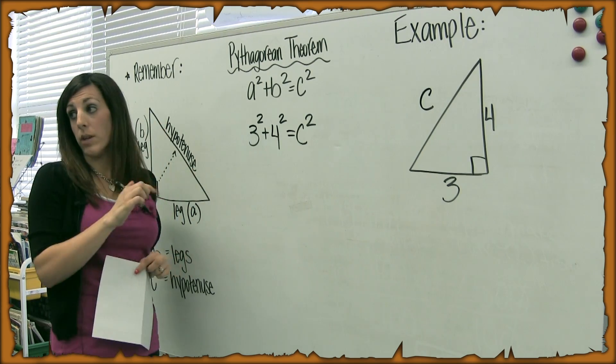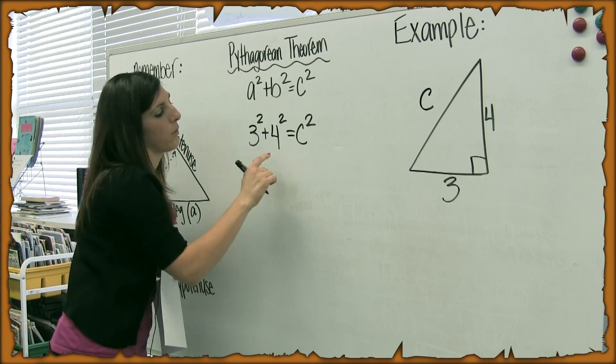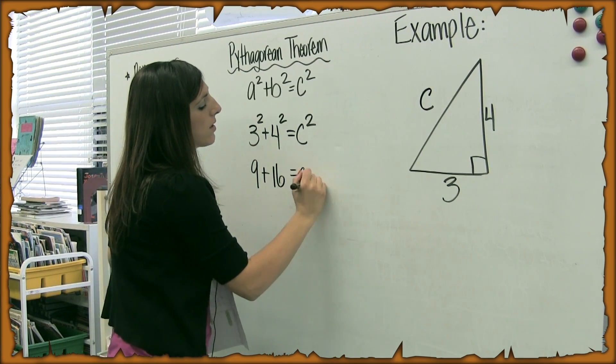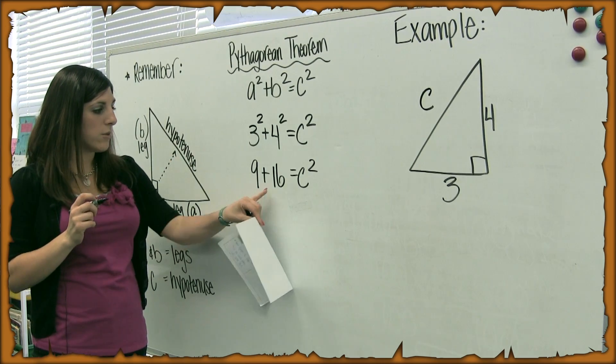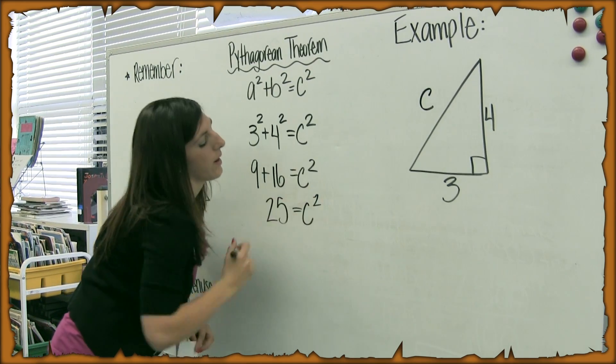So I'm going to do the math. I'm going to do exponents. So 3 squared, 3 times 3 is 9, plus 4 squared, 4 times 4 is 16, equals C squared. We still don't know what it is. So I'm going to add these two together. 9 plus 16 is 25, equals C squared.